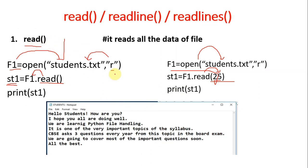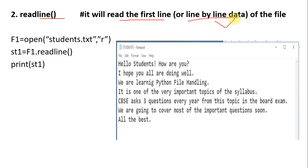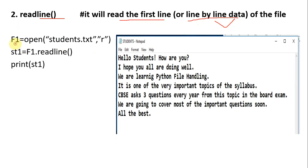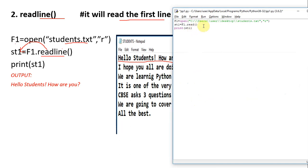Next is readline. The readline function reads the first line of any file — the first line of whichever file you open in your program. We can also use it to read line by line, which we'll discuss later. In this program, instead of read we write readline. It will read the first line: 'Hello students how are you,' store it in st1, and then print it.